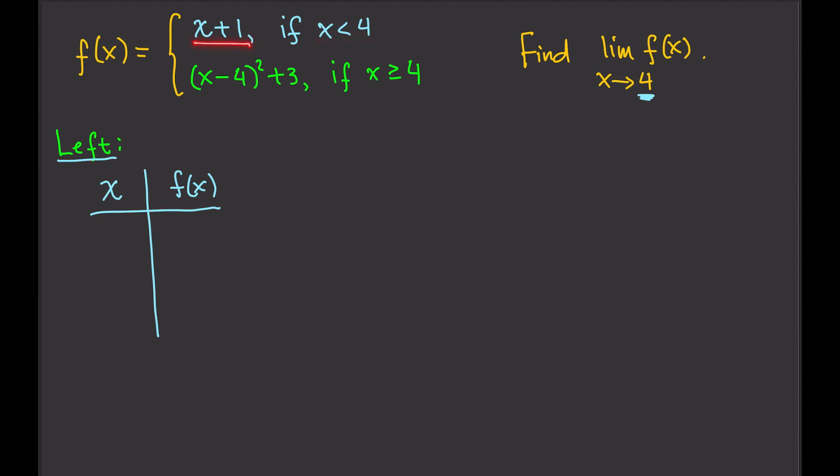So again, we are finding the left limit. That means we're looking at the numbers that are less than 4. Where do we find the numbers that are less than 4? We find that in this domain. And so therefore, we're going to use this to evaluate the left limit. Let's put some values for x.